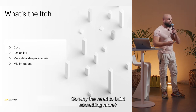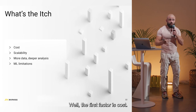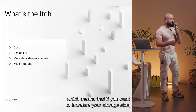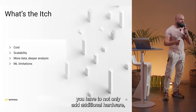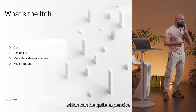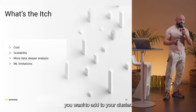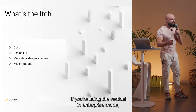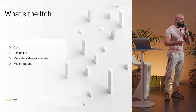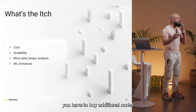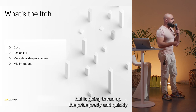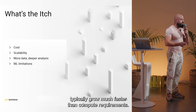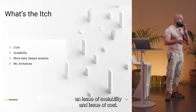Everything seems just fine — so why do we need to build something more? The first factor is cost. Vertica is licensed by the amount of data stored, which means that if you want to increase your storage size, you not only have to add additional hardware but also buy an additional license, which can be quite expensive. The second issue is scalability. In enterprise mode, you can only upgrade storage and compute in sync, meaning if you want more storage, you have to buy additional nodes with more processing power as well. Storage requirements typically grow much faster than compute requirements, so having these two in sync is both a scalability and a cost issue.